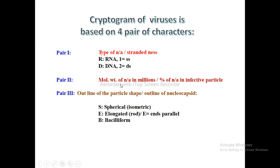Pair 2 tells us about the molecular weight of nucleic acid in millions and the percentage of nucleic acid in infective particles. Because many times the infective particle has not only nucleic acid but also a protein part — so this tells us how much, in percentage, the infective particle is made up of nucleic acid.